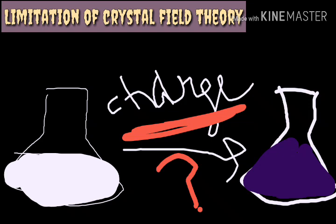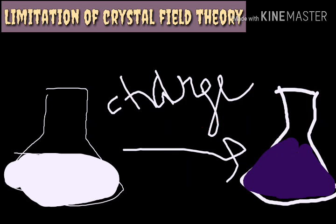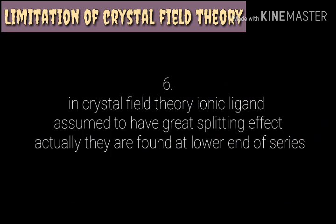Aur ek limitation: Crystal Field Theory mein ionic ligands — jo ligands hote hain jinke upar ions hote hain — unka great splitting effect hota hai. But wo series ke bilkul last mein paye jaate hain — at the lower end of the series. Toh wo great splitting effect kaise show kar sakte hain? Yeh bhi ek contradiction hai CFT mein.